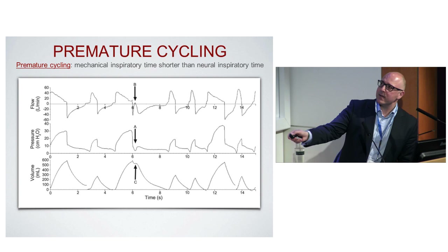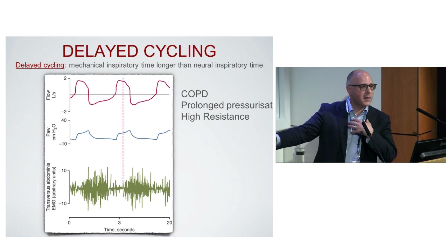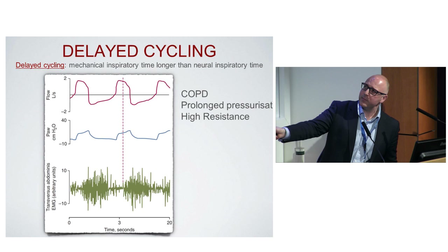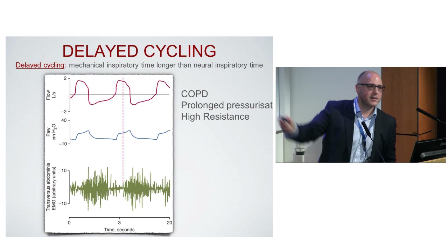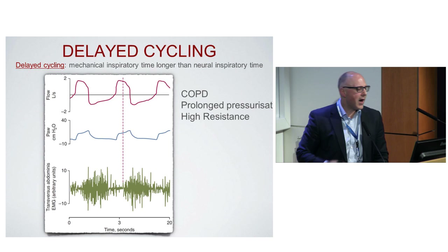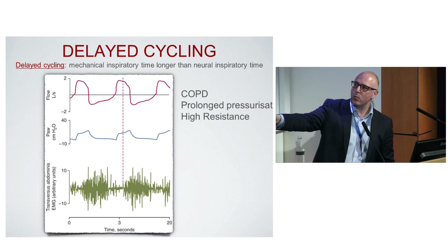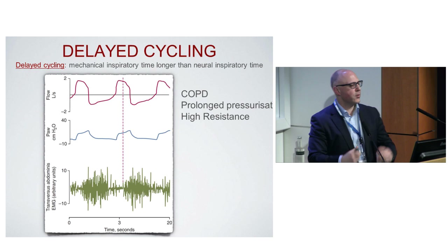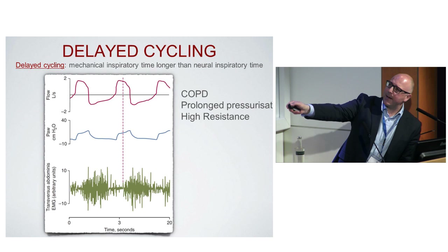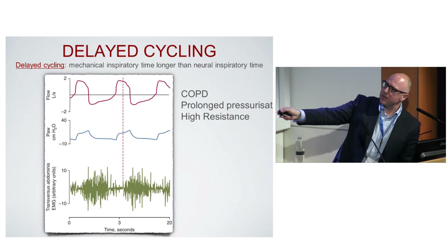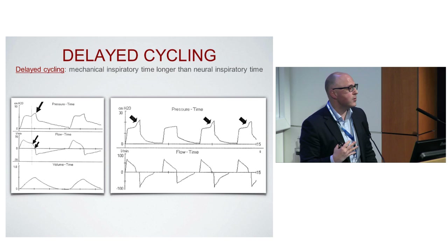Using EMG — electromyography — you can see that the patient wants to exhale at a certain time, whereas the ventilator is still inspiring: this is delayed cycling. How can you recognise delayed cycling at the bedside? Look at the pressure waveform — normally you see a little beak going up when the patient is stopping insufflation and trying to breathe out, causing an increase in airway pressure. Instead of the pressure being smooth, it goes up. You can also see the patient at the bedside breathing out, with accessory muscle use and a more tense abdomen.